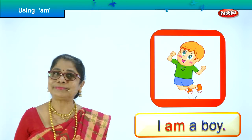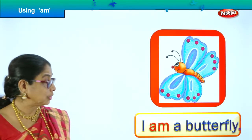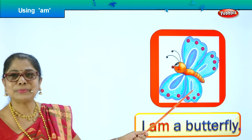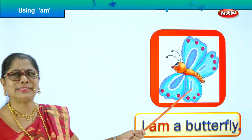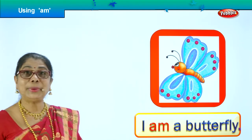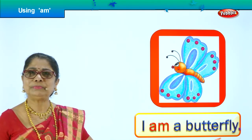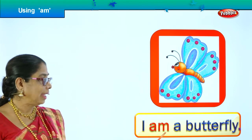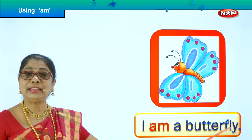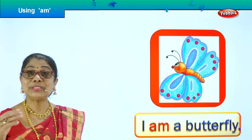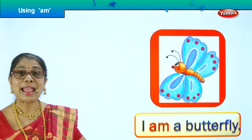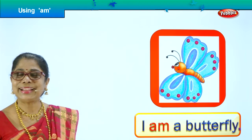Let's look at another picture and see the use of 'am' over there. Do you recognize this? Lovely, beautiful butterfly, isn't it? What does the butterfly say? 'I am a butterfly' — very proud. Beginning capital, ending with a full stop. Now do you see the use of 'am' in the sentence? What does the butterfly say? 'I am a butterfly.'